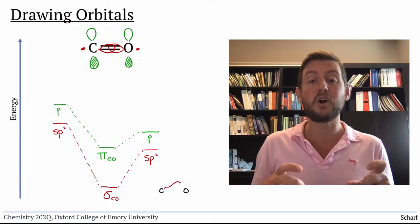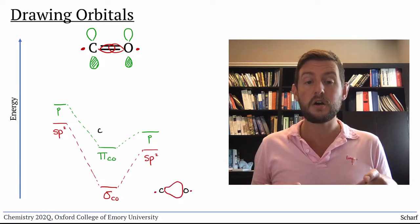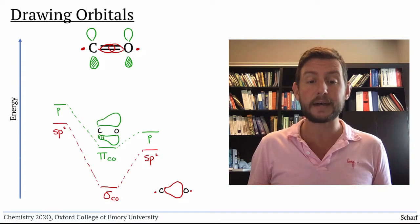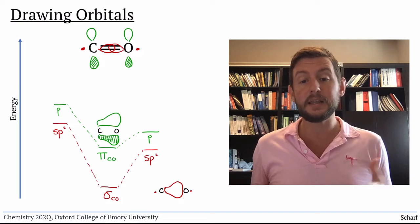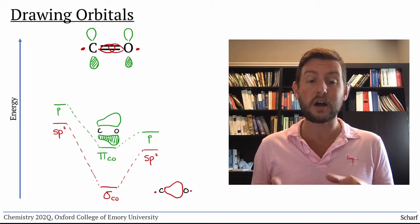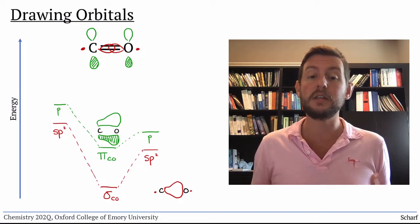The result of this is that the bonding orbitals are larger on the more electronegative atom. This really just means that the bonding electrons hang out closer to oxygen on average than they do closer to carbon.